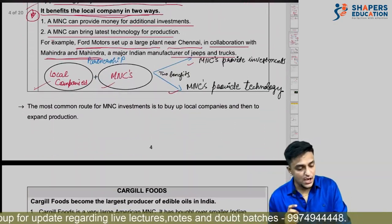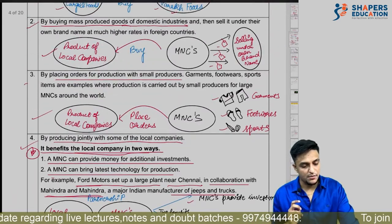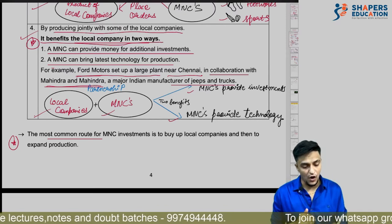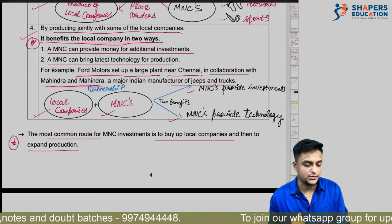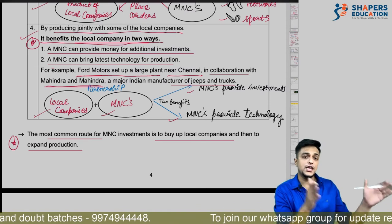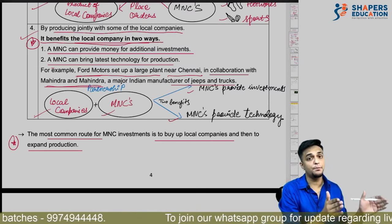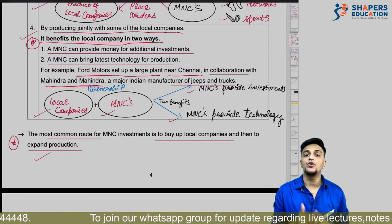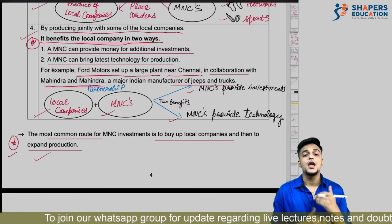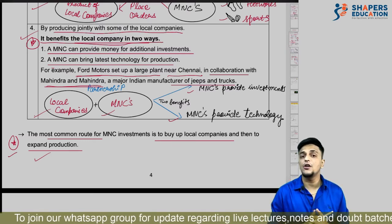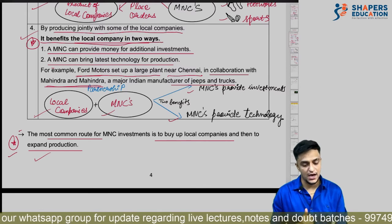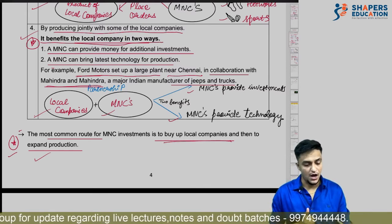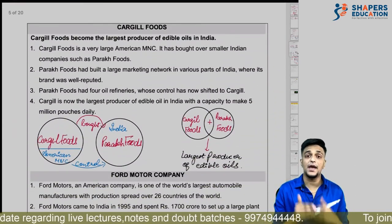This is also important for objective-type questions: the most common way MNCs spread production is to buy up a local company and expand production — purchasing a small local company and expanding production under their name. This is the most common route.